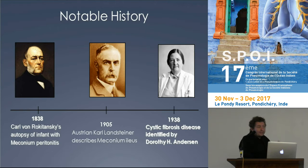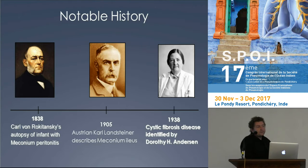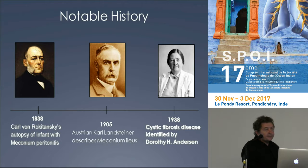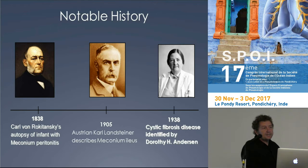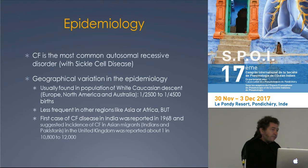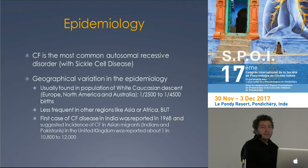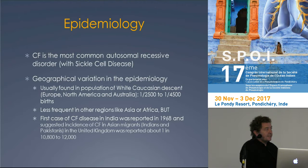The first description of CF was made in 1838 by Rocky Tansky. Then in 1905, and notably in 1935 by an Austrian colleague. But it's really in 1938 with Dorothy Anderson in New York who first described what CF is today. For us in the Indian Ocean, especially in India, epidemiology is key. For France, Reunion Island, Europe, North America, and Australia, it's far the most common genetic disorder, while in India it competes with sickle cell disease.